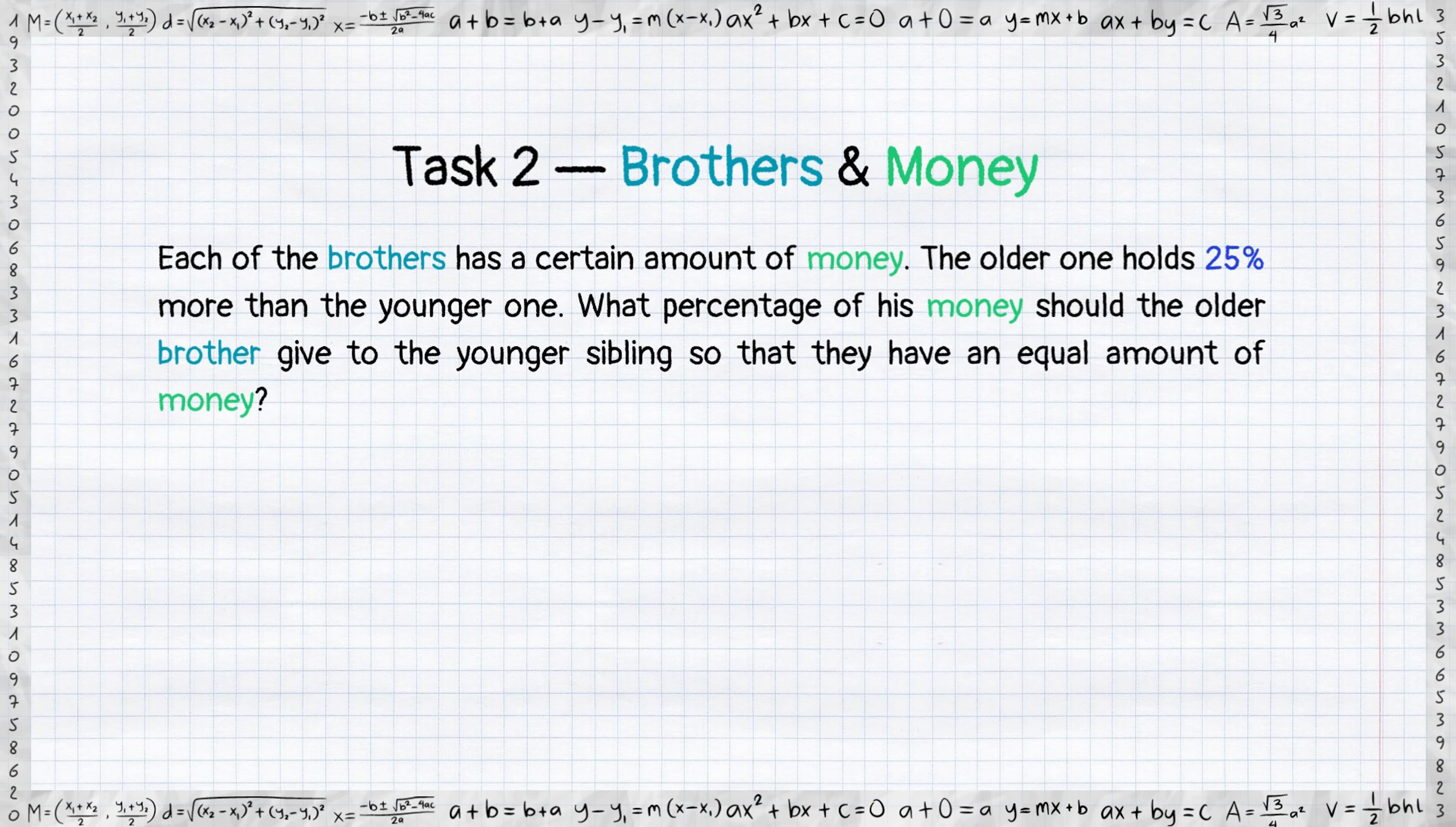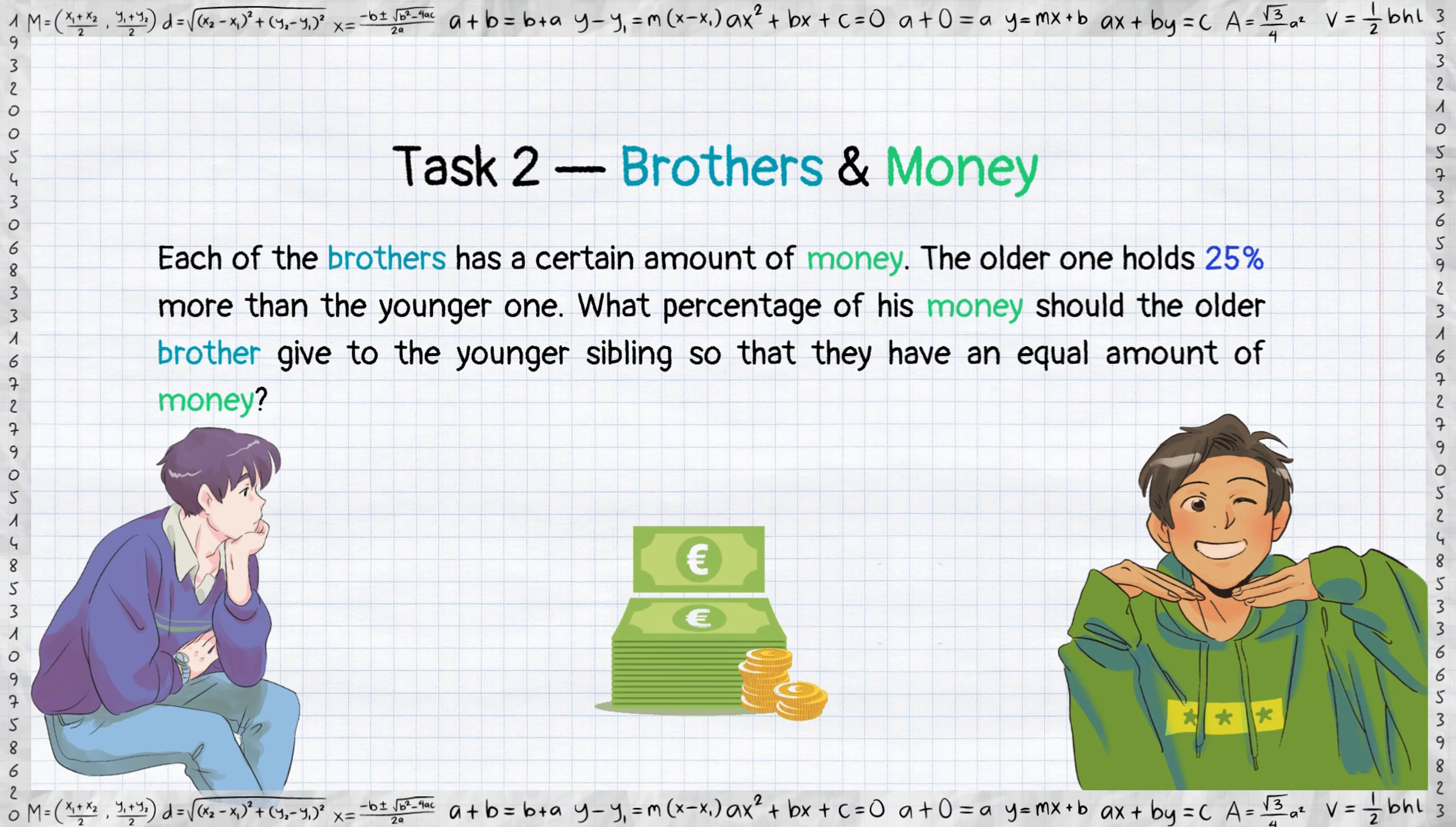Each of the brothers has a certain amount of money. The older one holds 25% more than the younger one. What percentage of his money should the older brother give to the younger sibling so that they have an equal amount of money?